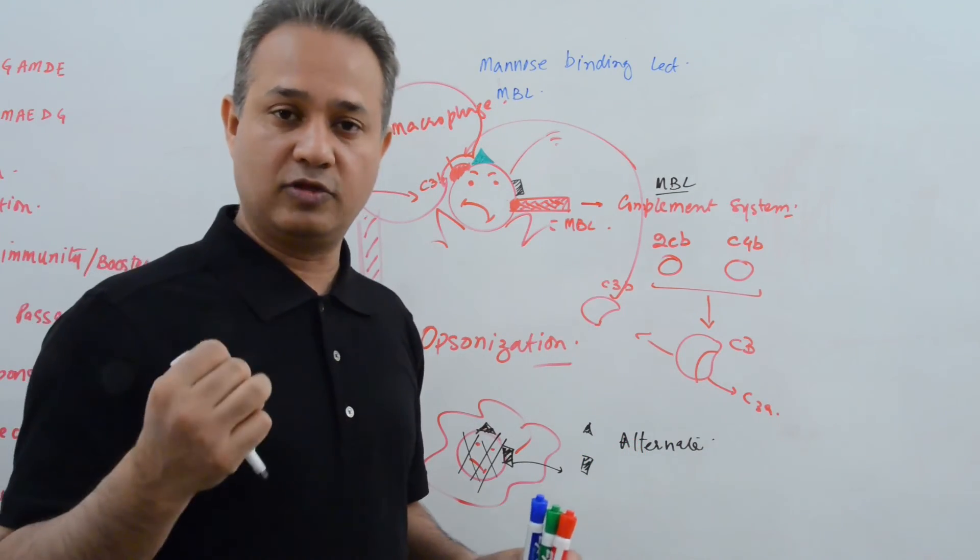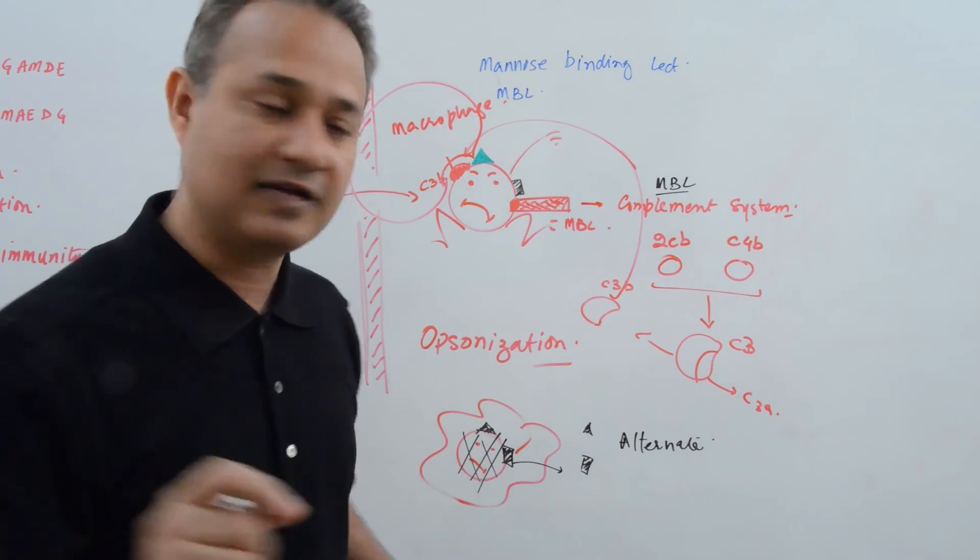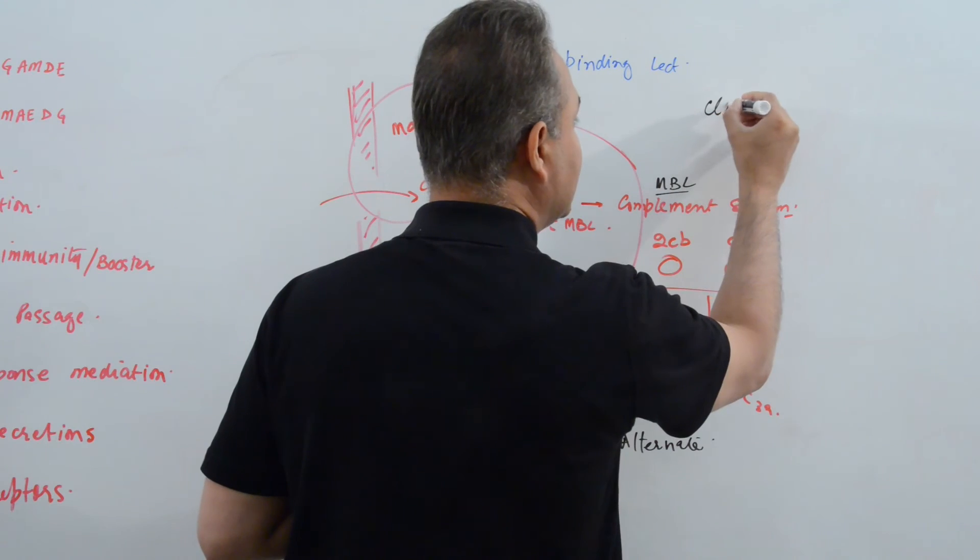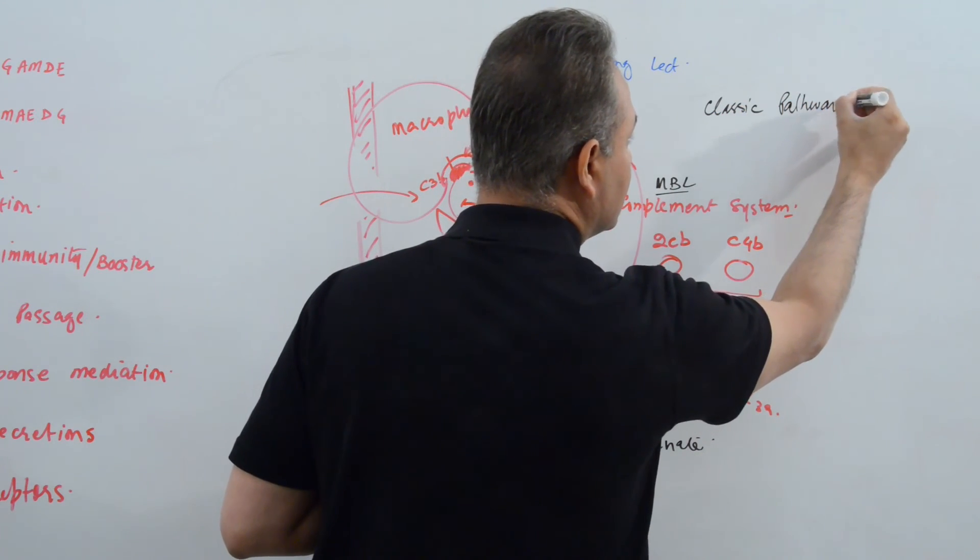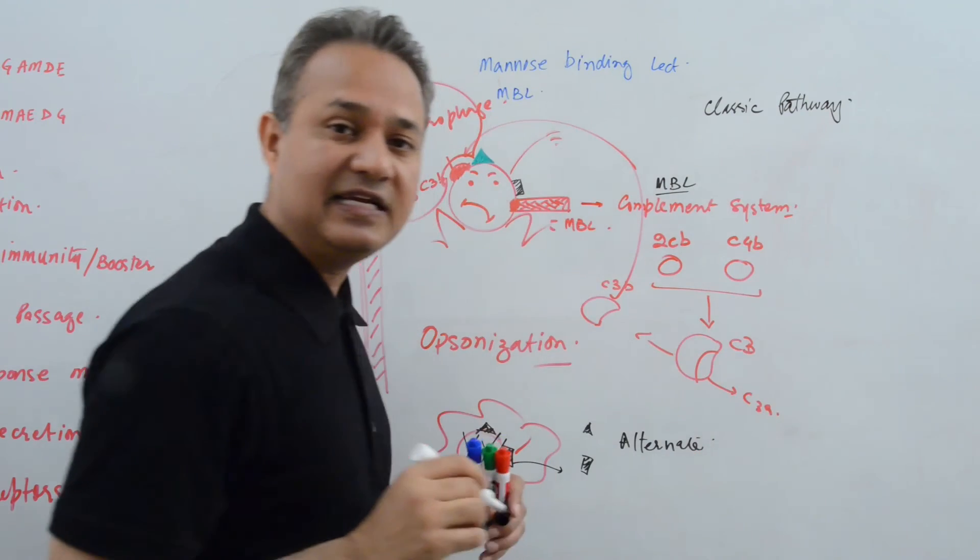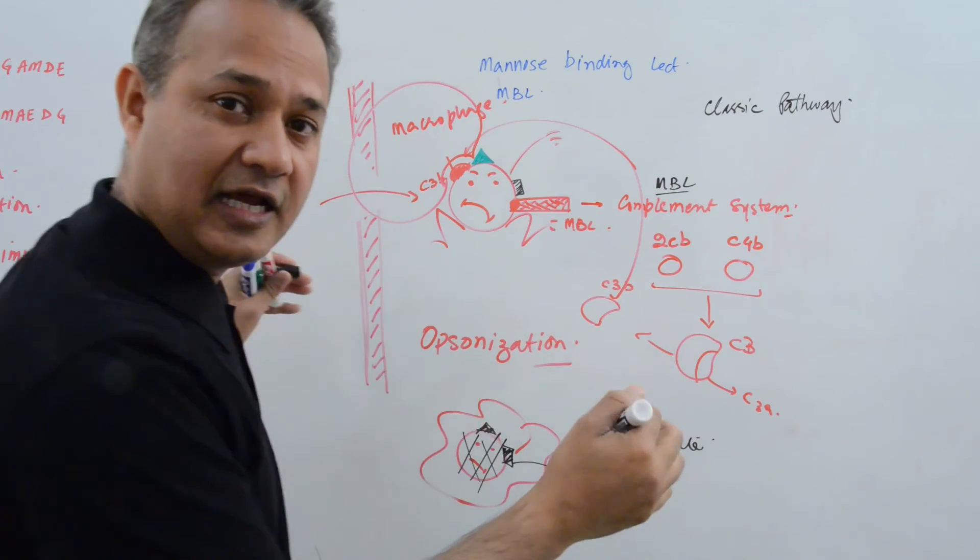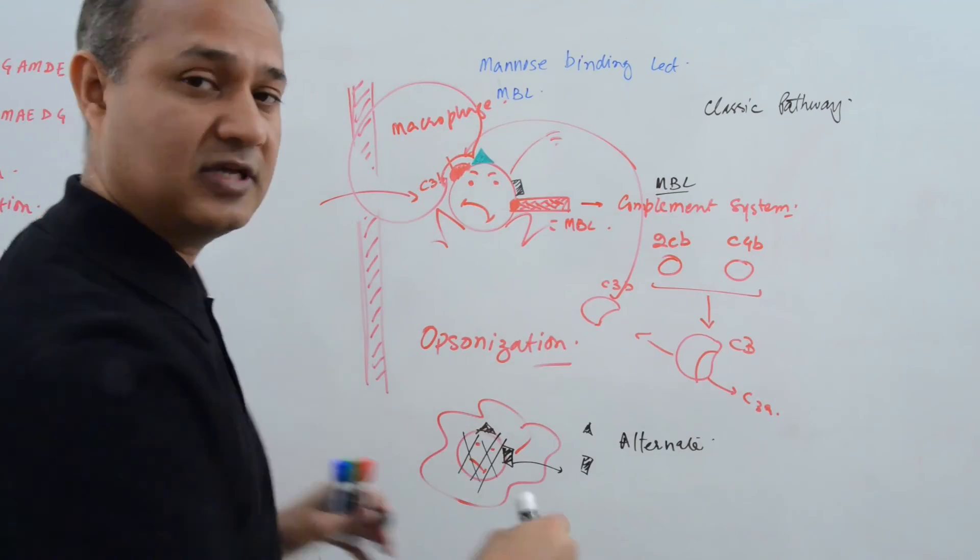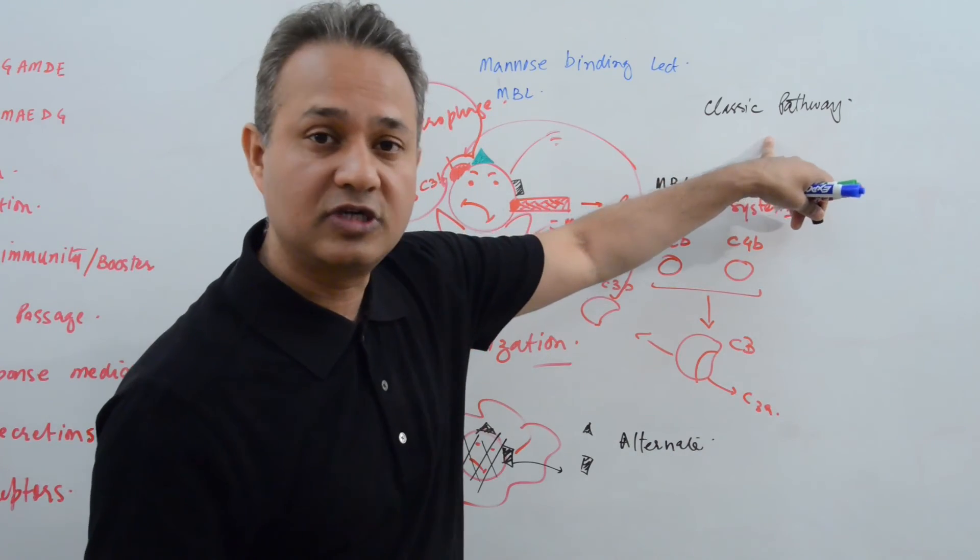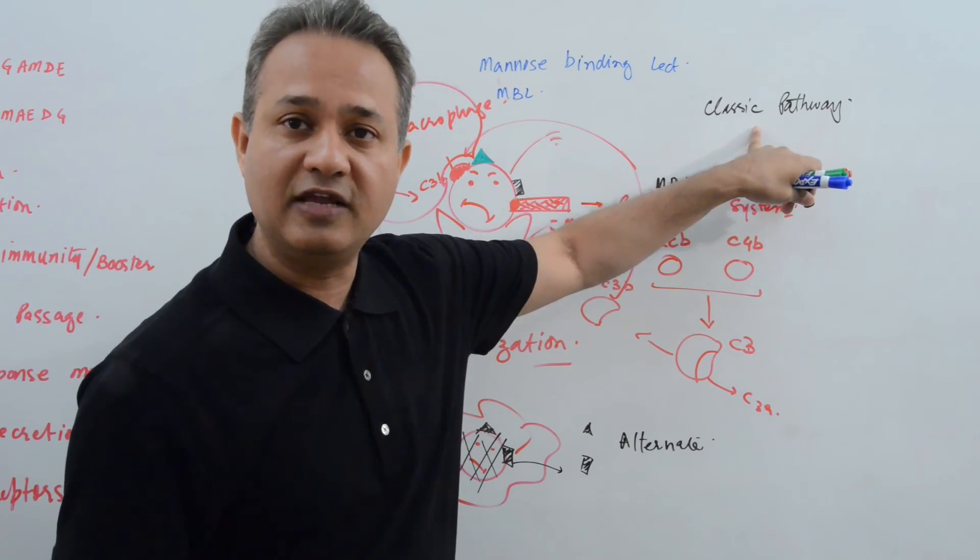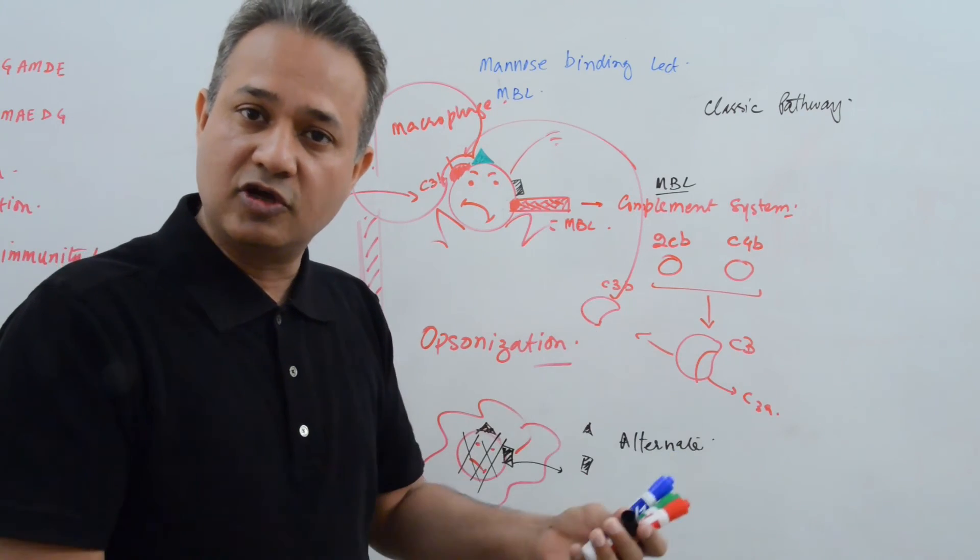Now let's go to the third pathway. The third pathway for the complement fixation is called the classic pathway. Classic pathway needs immunoglobulin to be present. And now, ta-da, this lecture today is about immunoglobulin. So here is where we are going to tie how does immunoglobulin work with the complement system and trigger the complement fixation.